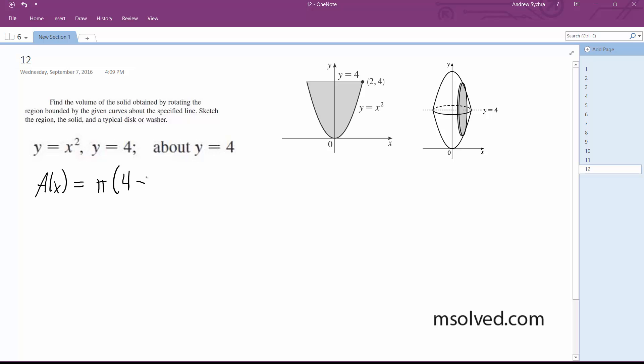Pi times 4 minus x squared, squared. So here's your r squared for your disk, and then times pi. Multiplying this out we get pi times quantity 16 minus 8x squared plus x to the fourth, and then we can integrate this.